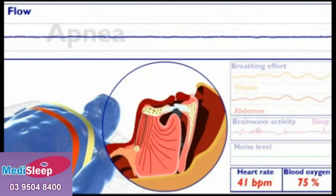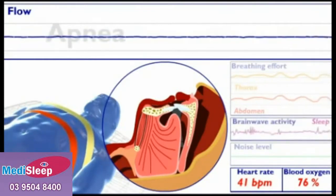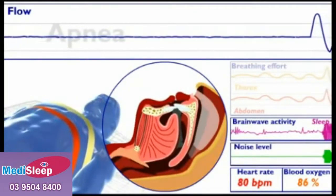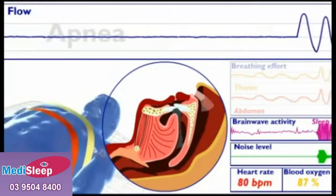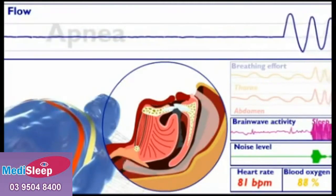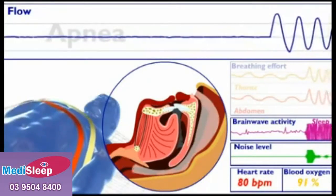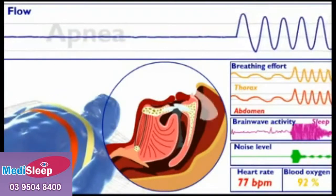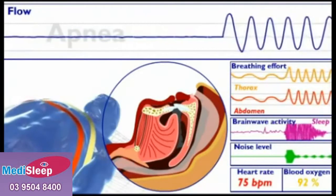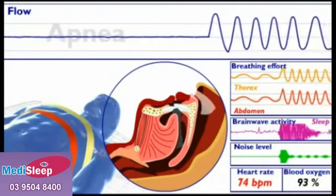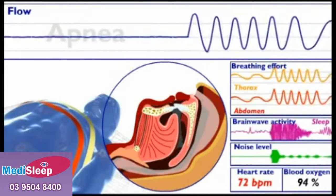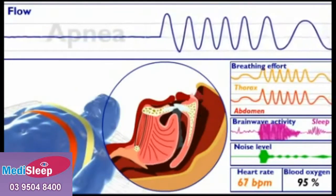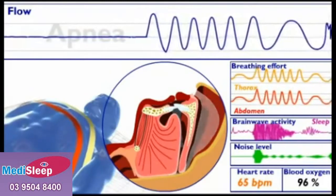That is why an apnea always triggers a strong arousal with severe effects on the body. Our model gasps for air, causing a sudden movement. Brain activity increases significantly, and the heart rate after arousal is almost double what it was during the apnea. Our model's rapid breathing increases the airflow and the blood oxygen level begins to rise again. The tongue and soft palate quickly return to their normal position as the airway opens fully, and the airflow curve returns to the normal bell shape.